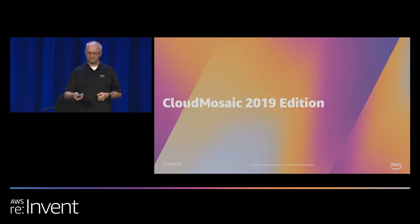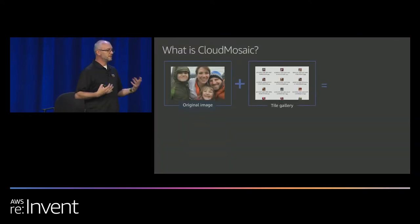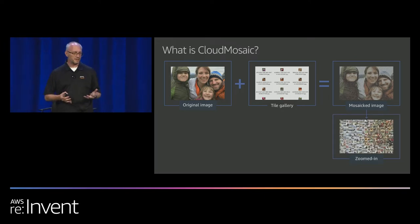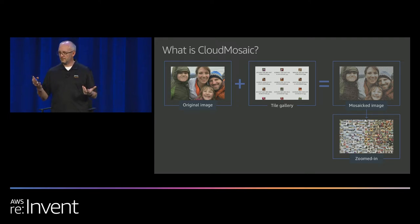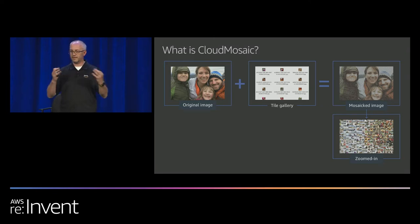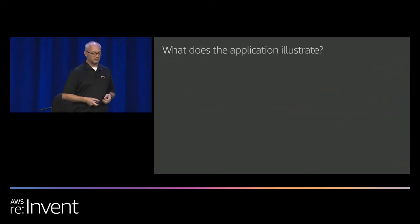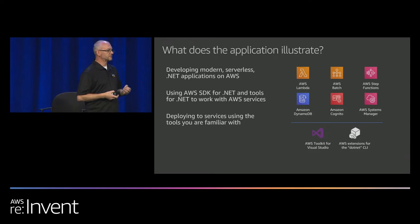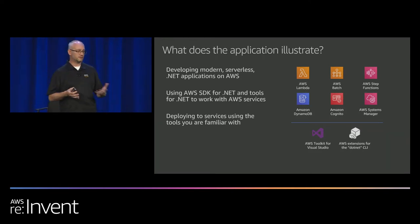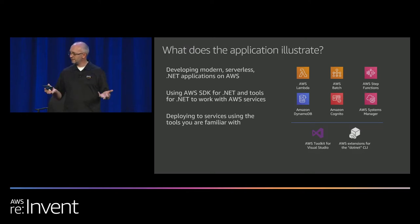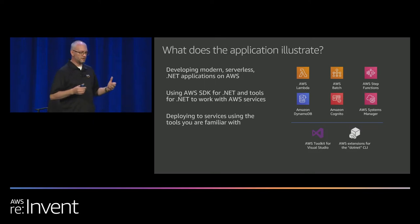Cloud Mosaic 2019 edition. Cloud Mosaic is a web application that allows an authenticated user to upload an image file and combine that with thumbnails from a tile gallery to make a mosaiced image. When they click on that mosaiced image and zoom in, you see all the individual little thumbnails. This application is designed to demonstrate serverless application development on AWS, deploying to services with the toolkit for Visual Studio, our extensions for the .NET CLI, and services like Lambda, Batch, Step Functions, etc.